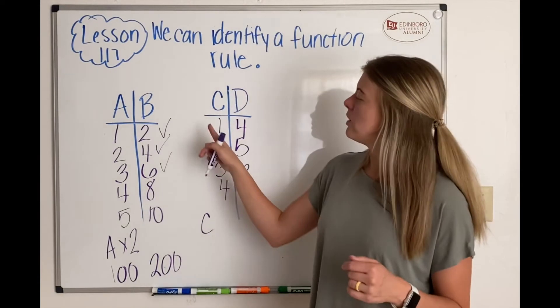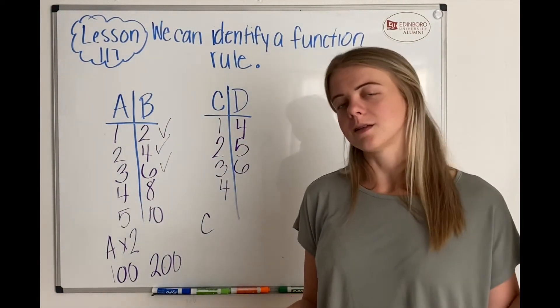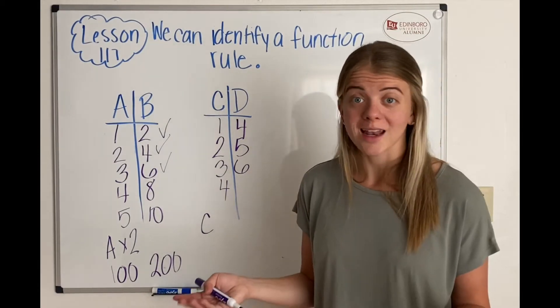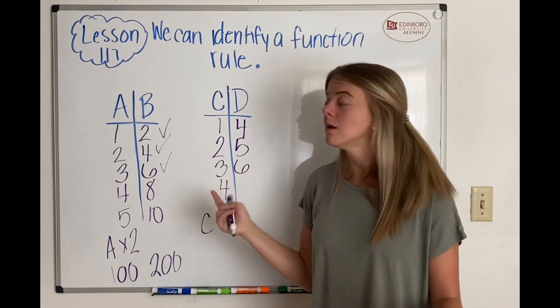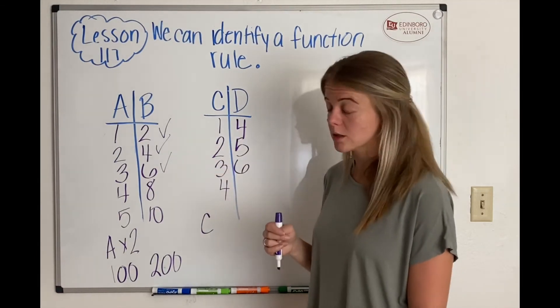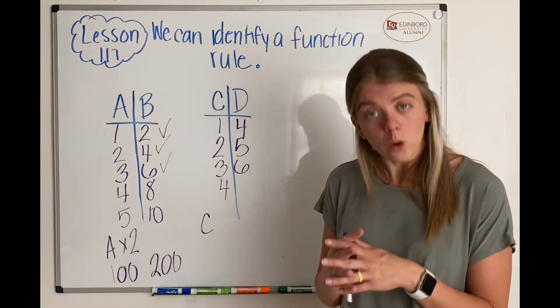How else can we get from 1 to 4? Well, we know we're not going to subtract or divide because it's not going down. So let's try adding 1 plus 3 equals 4. That works. So now I have to see if my function plus 3 works.